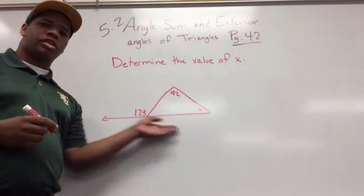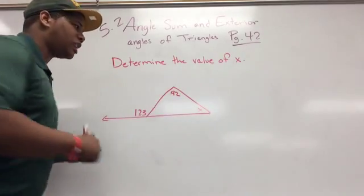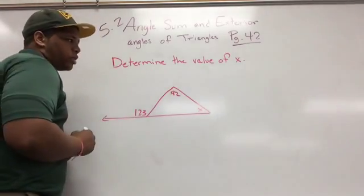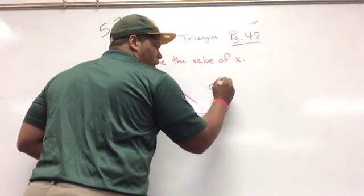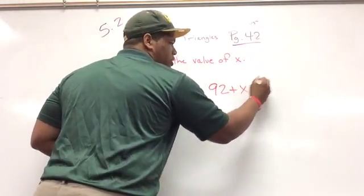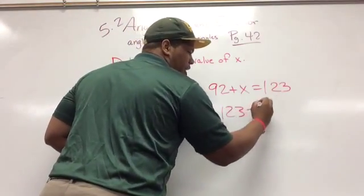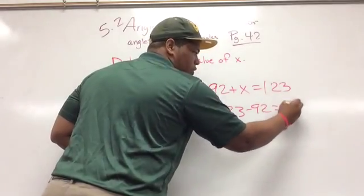Okay, so I'm given the same triangle with the same exterior angle. Another way to do this is I know that this angle here and this x equals 123. So I have 92 plus x is equal to 123, or 123 minus 92 equals x.